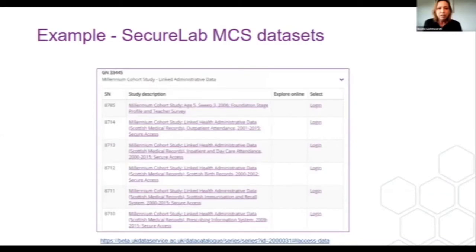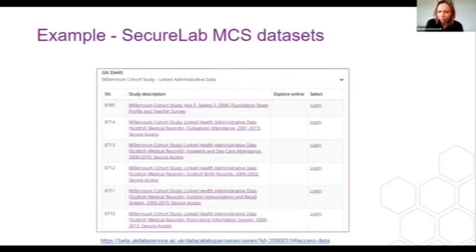As an example of secure lab data sets, I have picked the Millennium Cohort Survey, which fits in nicely with what we just heard. For instance, study number 8714 is the Millennium Cohort Study linked health administrative data, Scottish medical records, outpatient attendance 2001 to 2015, secure access data set. Another example would be Millennium Cohort Study linked health administrative data, Scottish medical records, Scottish birth records 2002. This is just a small snippet — we have many more — but it illustrates what sort of data we are talking about here.